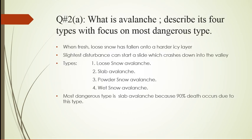This is question number 2 part A, and the question is: What is Avalanche? Describe its 4 types with focus on the most dangerous type. This question is related to the Gyari sector incident that occurred in 2011, where more than 150 army and civilian personnel died. So the question is: What is an Avalanche? Describe its 4 types with focus on the most dangerous type.